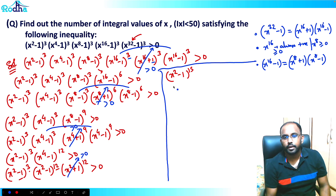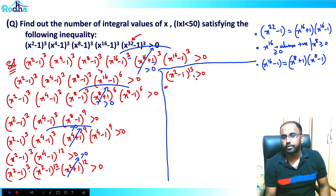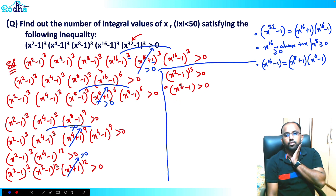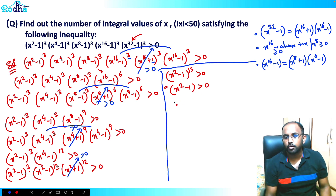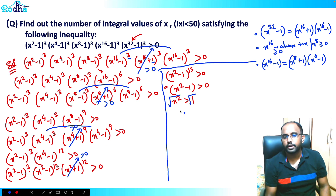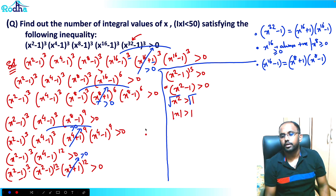So (x² - 1)¹⁵ is greater than 0. Since it's an odd power, x² - 1 must itself be positive. So x² > 1. Taking square roots of both sides, we get |x| > 1, which means x > 1 or x < -1.